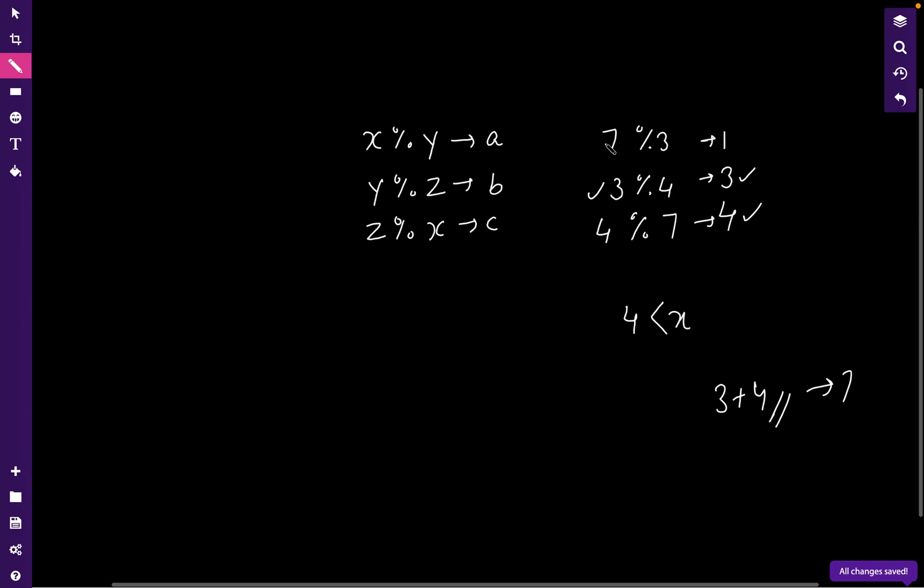So if we put 7 here, let's see if the conditions are satisfying. So 7 percent 3 is giving us 1, and 4 percent 7 is also 4. So this is one example.